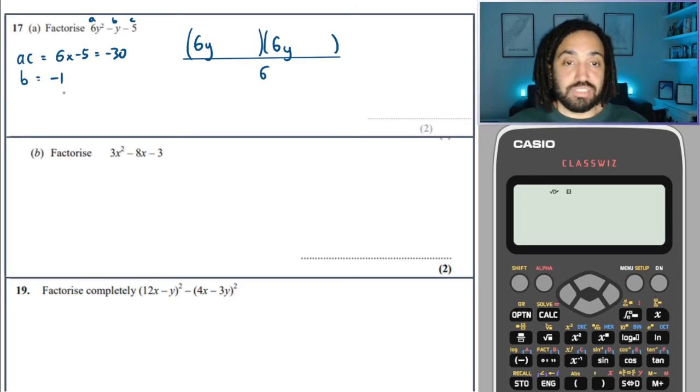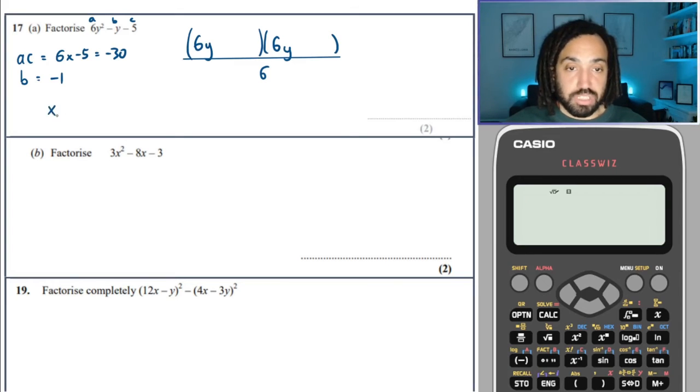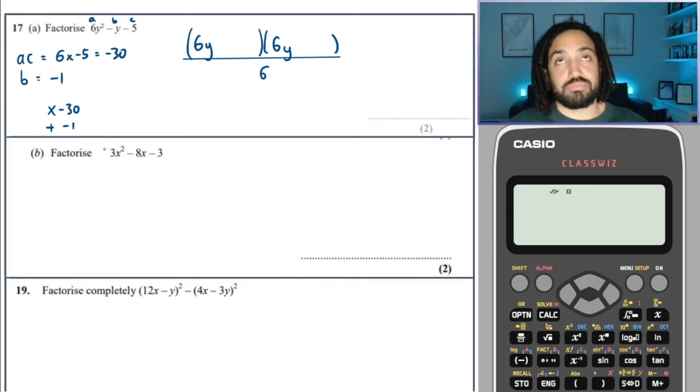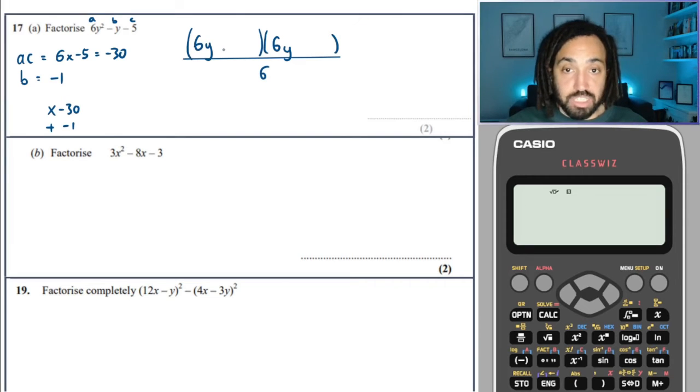We then need to find those two numbers, that times to make minus 30, add to make minus 1. So they must be one positive, one negative, times to make a negative. And the negative must be bigger, because it's going to add to make minus 1. And 6 and 5 fit the bill perfectly.